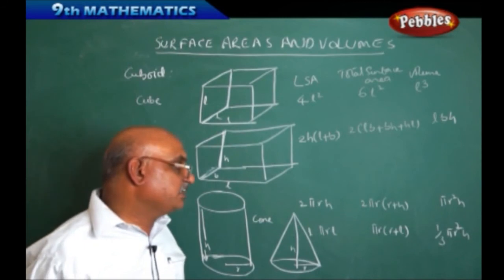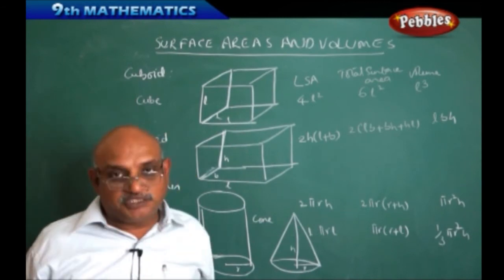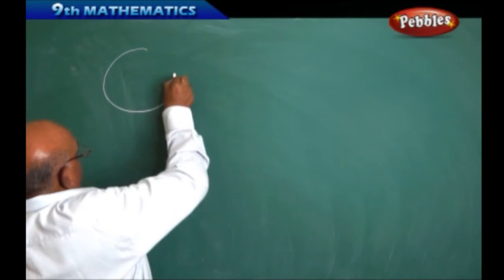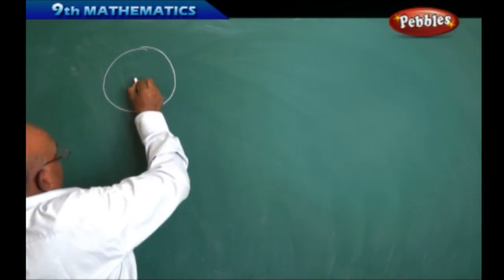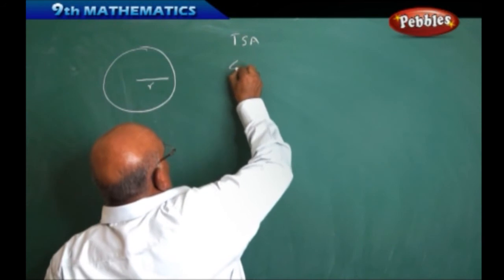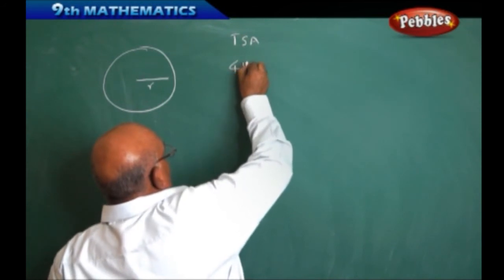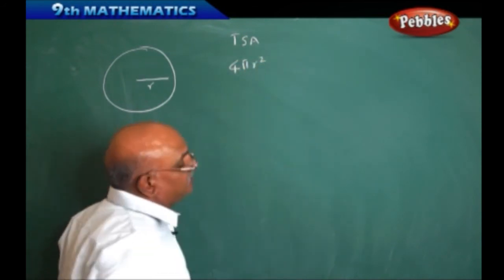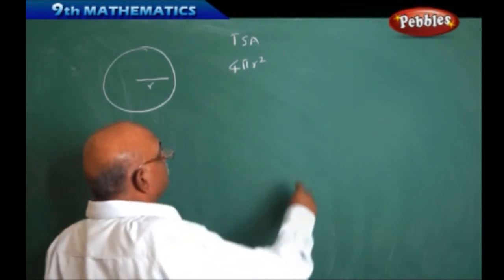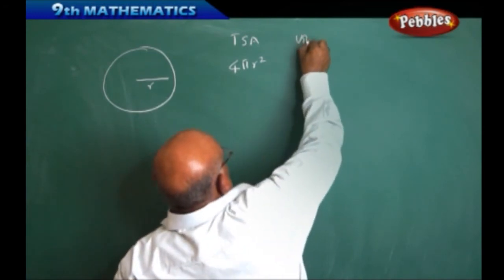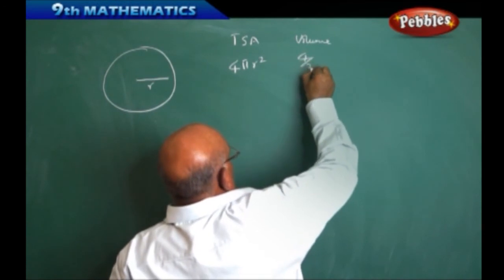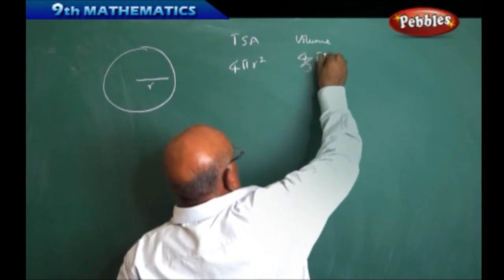Now we are going to think about the sphere. Suppose if I take a sphere, this is the radius R. The total surface area is equal to 4πR². The volume is equal to (4/3)πR³.